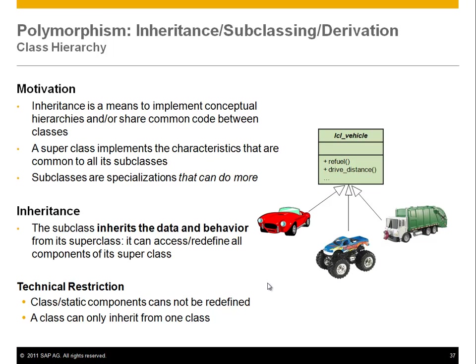Inheritance is a means to implement conceptual hierarchies and share common code between classes. A superclass implements characteristics common to all its subclasses, and subclasses are specializations that can do more. For instance, LCL vehicle has methods refuel and drive distance, and we have a sports car, a monster truck, and a garbage truck. They don't need to duplicate the same implementations — truck and car had the same implementations for certain methods and you don't want to duplicate code.